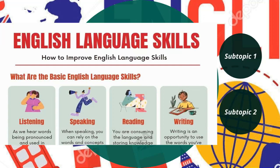The five skills are: listening, speaking, reading, and writing. Listening is the ability to decode the meaning of an audio string. Speaking is the ability to encode thoughts and concepts into oral form. Reading is the ability to decode the meaning of a written string. Writing is the ability to encode thoughts and concepts into written form.